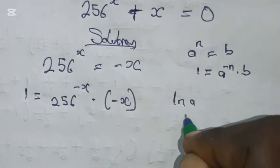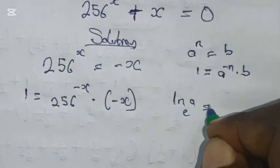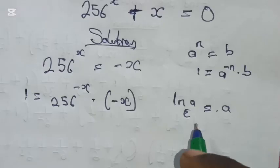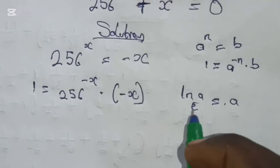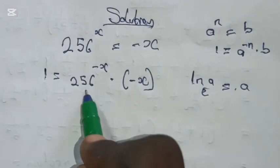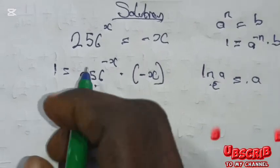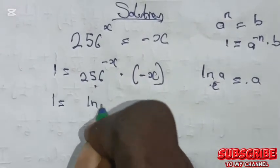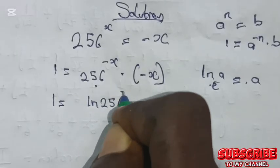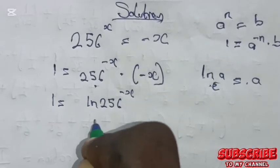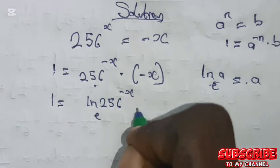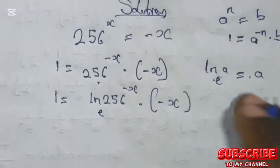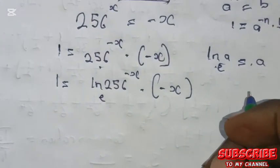The next step: recalling the property that the natural log of a with base e equals a, so either of the two are equal to each other. We are now going to rewrite this in this form by saying we have the natural log of 256 raised to the power of minus x with base e, multiplied by minus x.